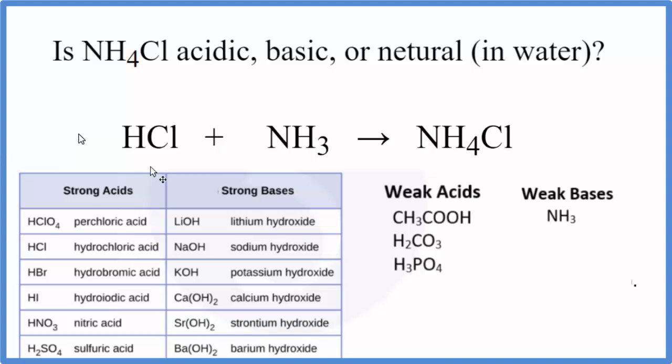We can see on the table for the acids, right here is HCl. That's a strong acid. Let's write SA for strong acid. And NH3 is not here, but it is a weak base. Let's put WB up there. Now we know the strengths of each of these substances.